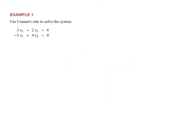Let's see that theorem in action in a small 2-by-2 system of equations. We write down matrix A — the coefficient matrix — with entries 3, negative 2, negative 5, and 4. The determinant of A is 3 times 4 equals 12, minus negative 5 times negative 2, which is minus 10. So 12 minus 10 is 2. The determinant of A is 2.